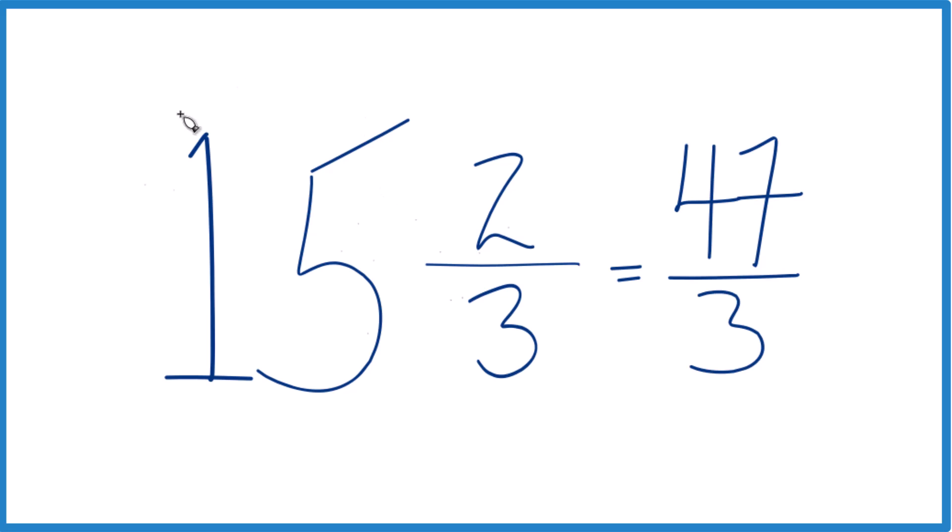Let's do it one more time. 15 times 3, that's 45. 45 plus 2, that gives us the numerator here, 47. Then we just bring that 3 across, and we're done.